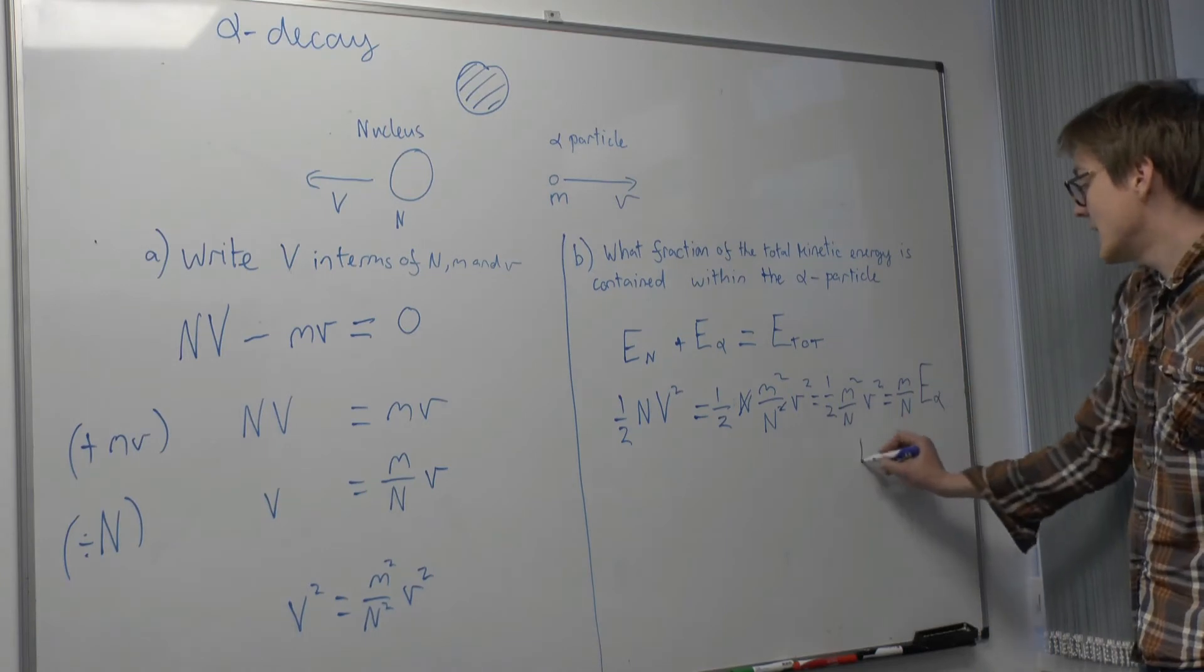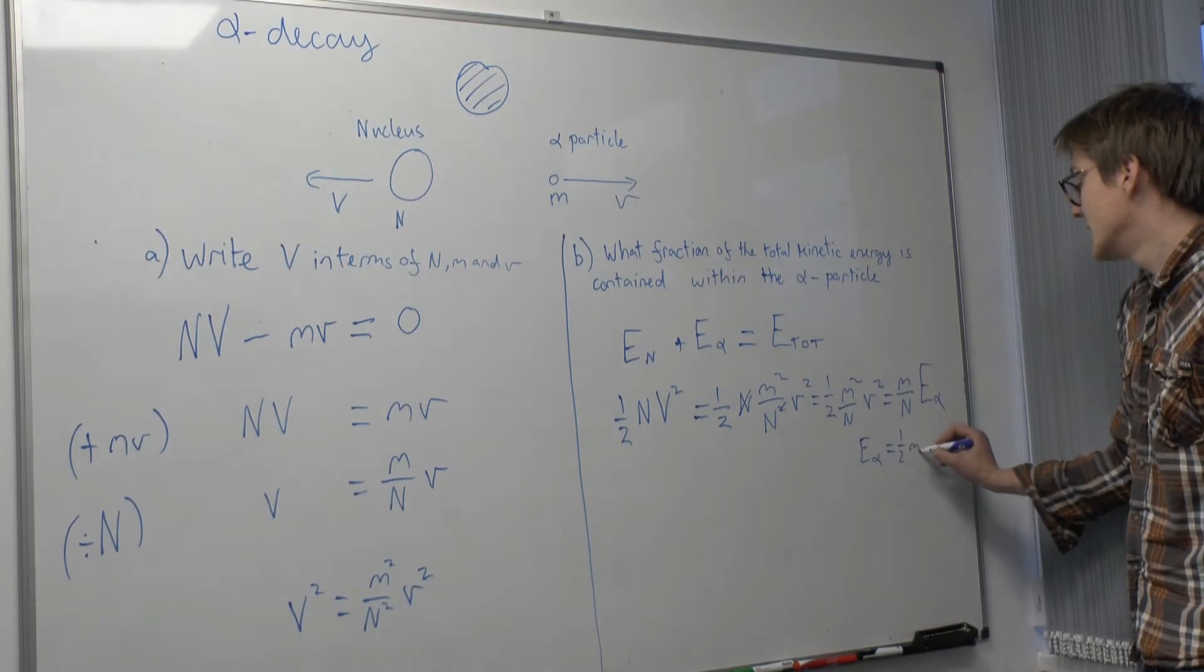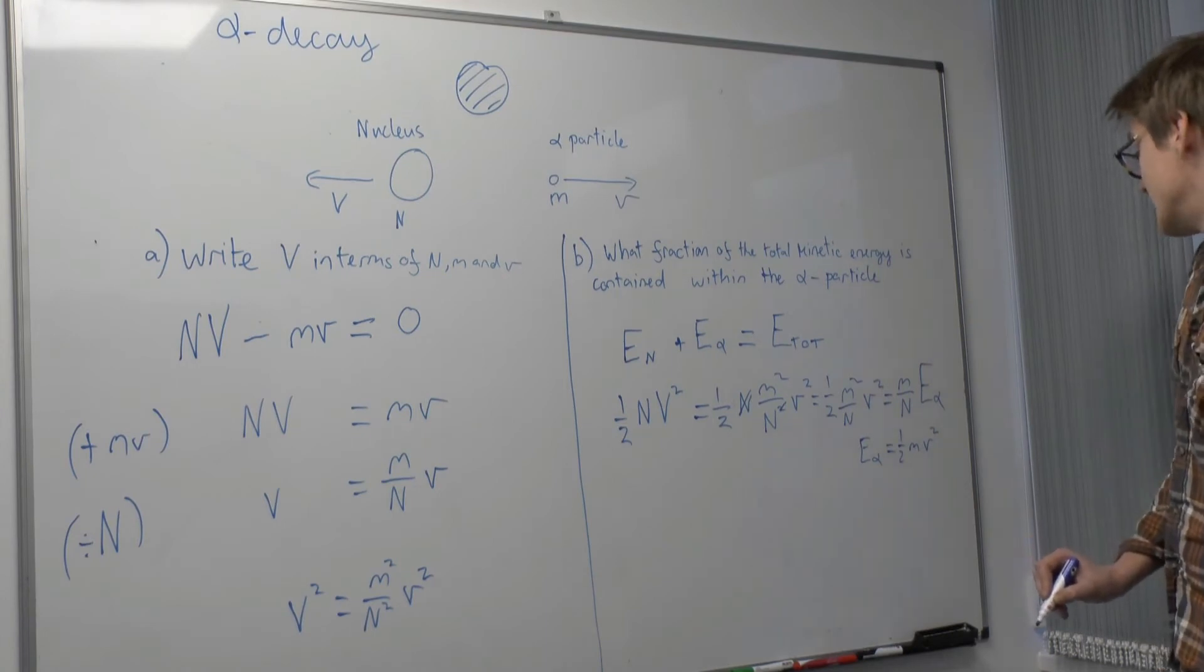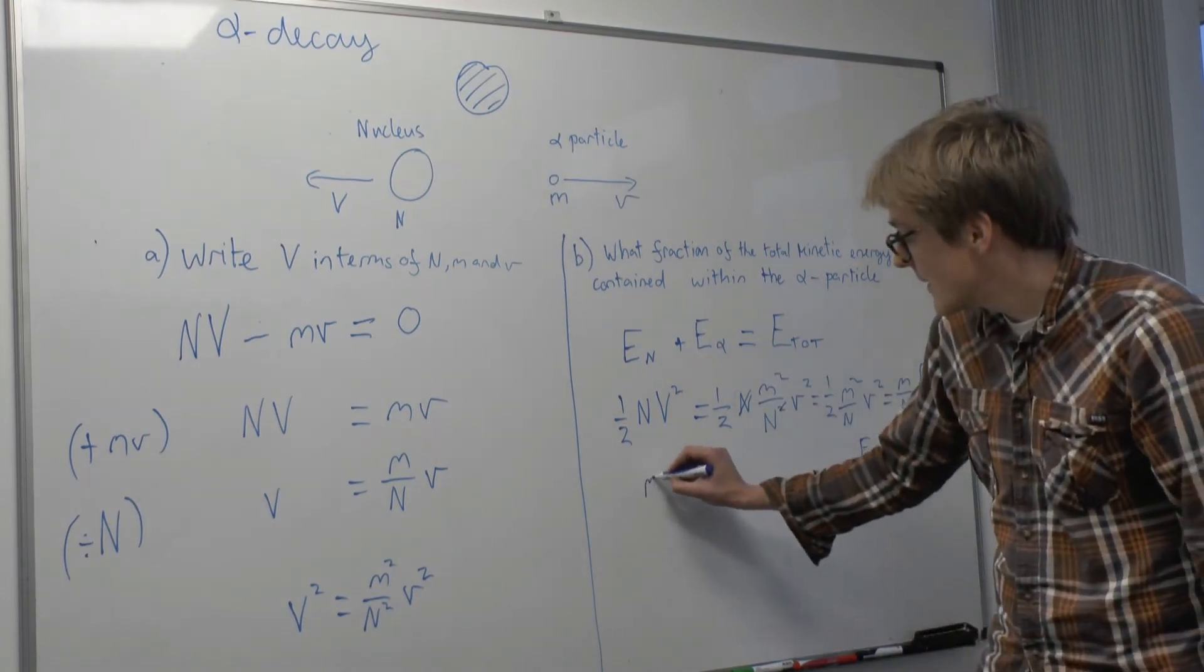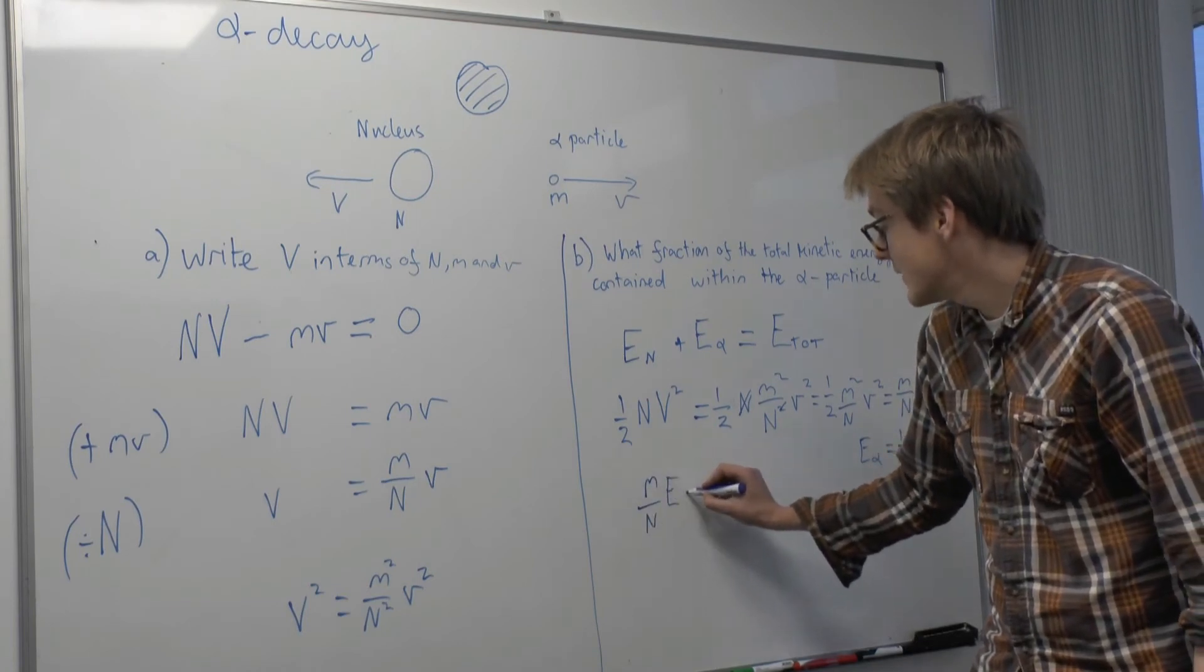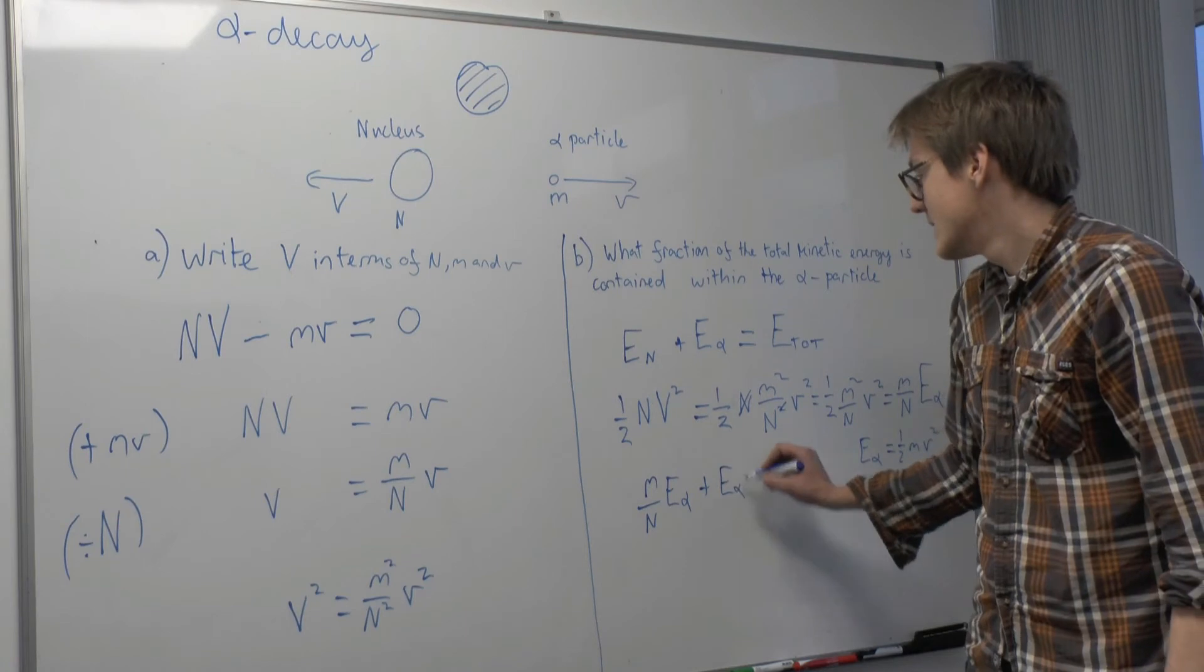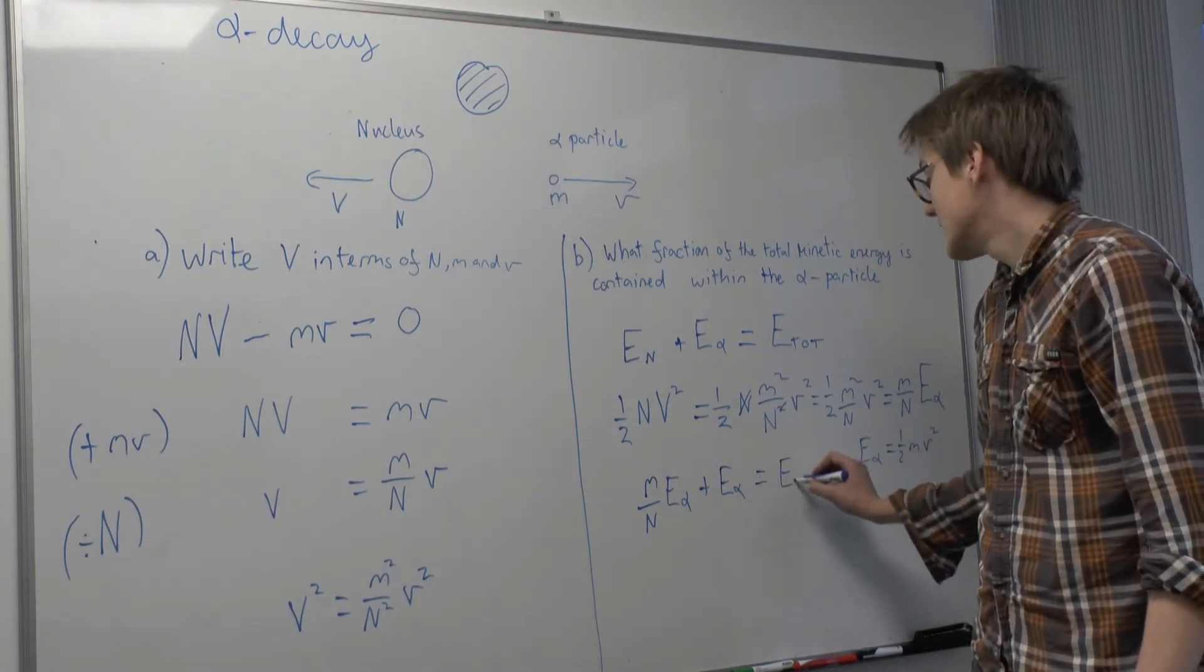Where E alpha is a half little m, little v squared. So if we substitute this into this expression, we get M over N times E alpha. That's E big N plus E alpha, the energy of the alpha particle, equals E total.